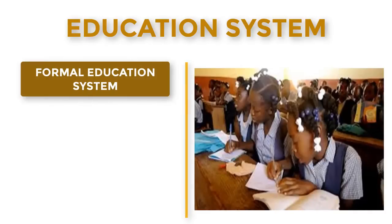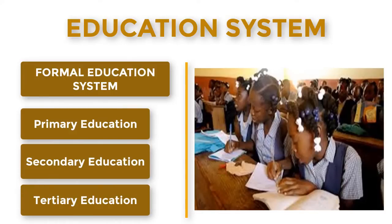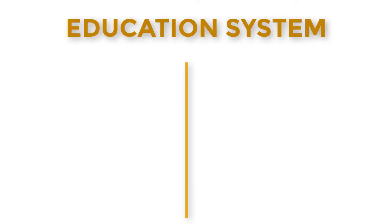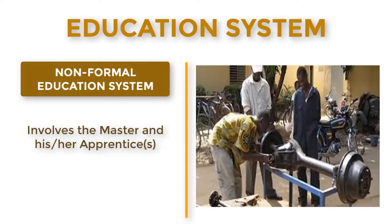Let's come back to education and look at the different types of systems there. Number one, we have the formal education system — this is the organized school system: the primary, secondary, and tertiary education system. Number two, we have the non-formal education system, referred to as the training system, as opposed to the formal system. It is a training system where you have apprentices and a master who guides and trains them to acquire skills.